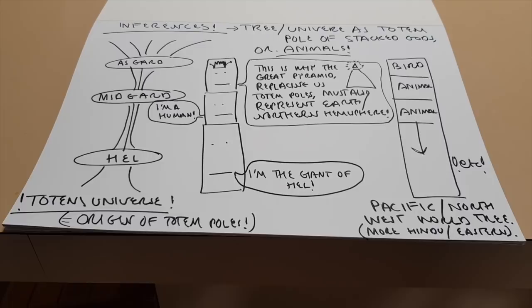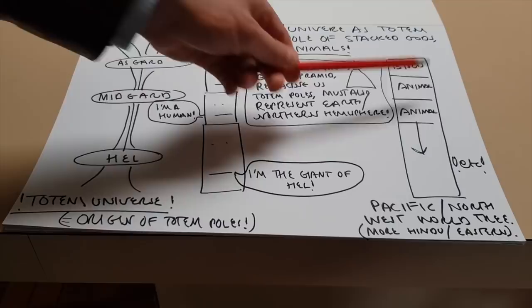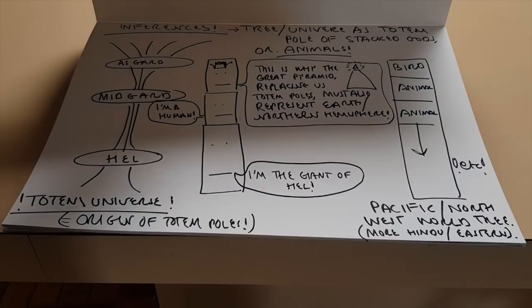He didn't know why the Earth seems to represent the northern hemisphere. But that's the conclusion he mathematically came to following off the ideas of Newton, which I have not been able to locate the origin of those so-called Newtonian thoughts. And now we look at the Pacific Northwest World Tree, and it's more of a Hindu Eastern kind of thing with the birds often on top.